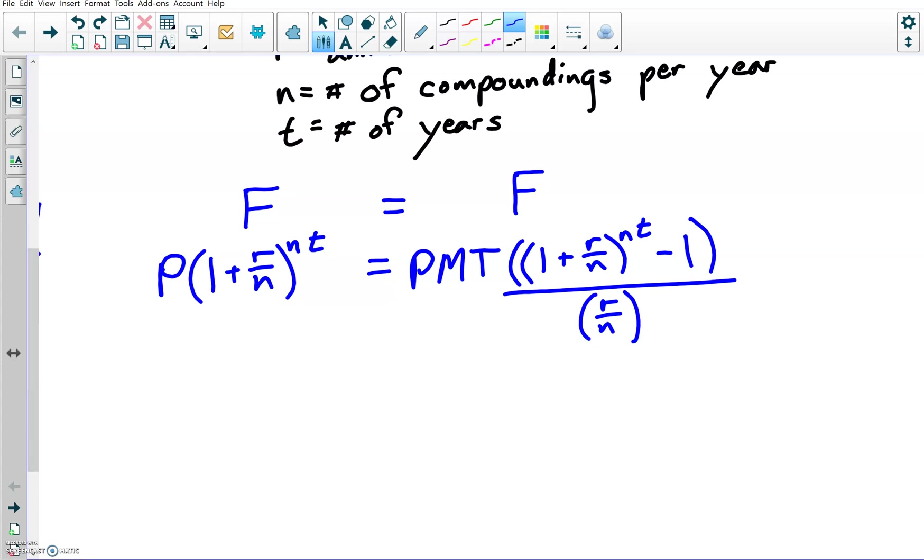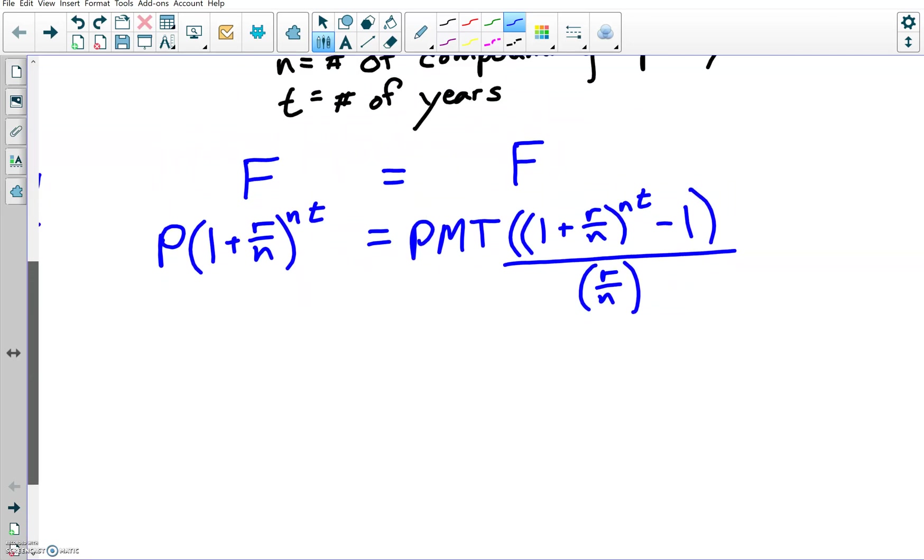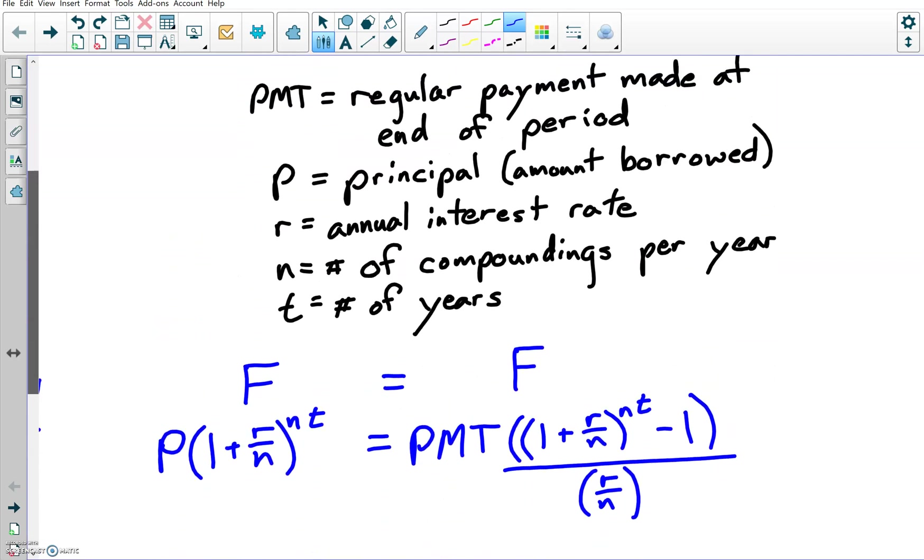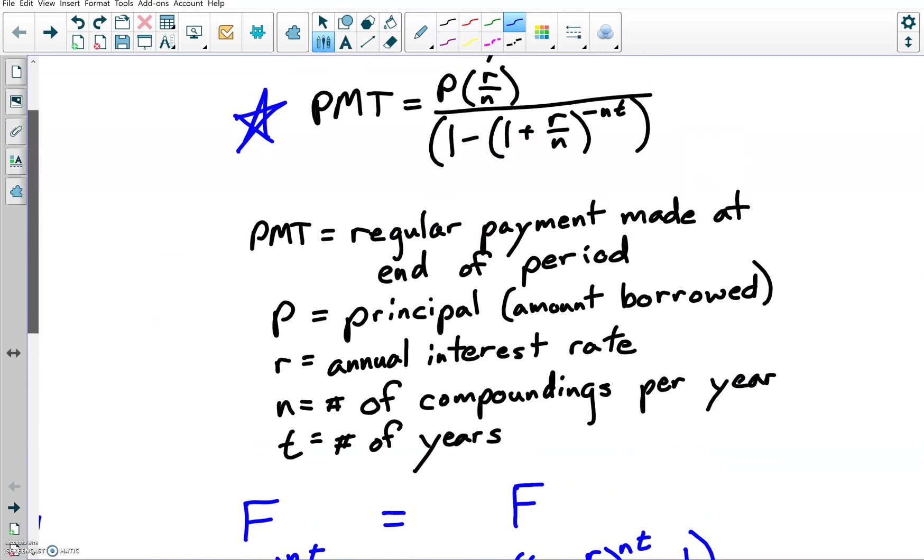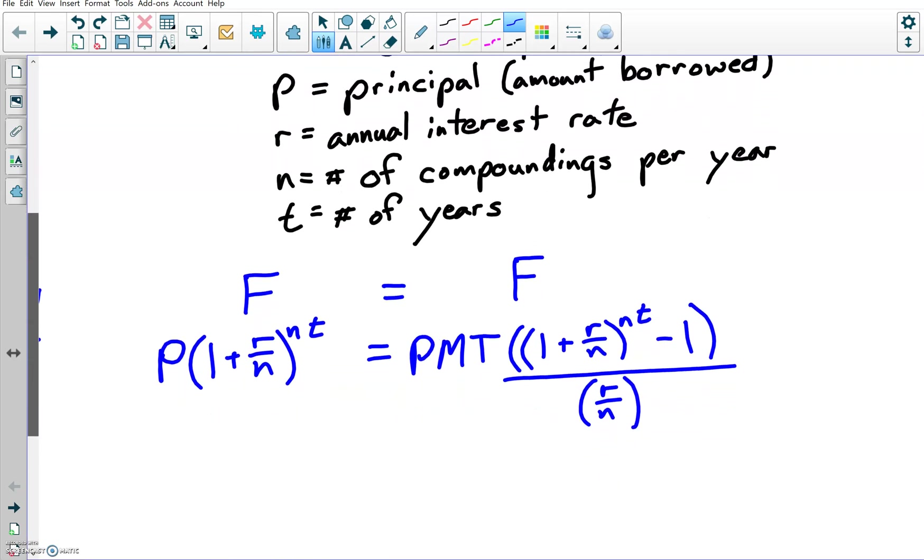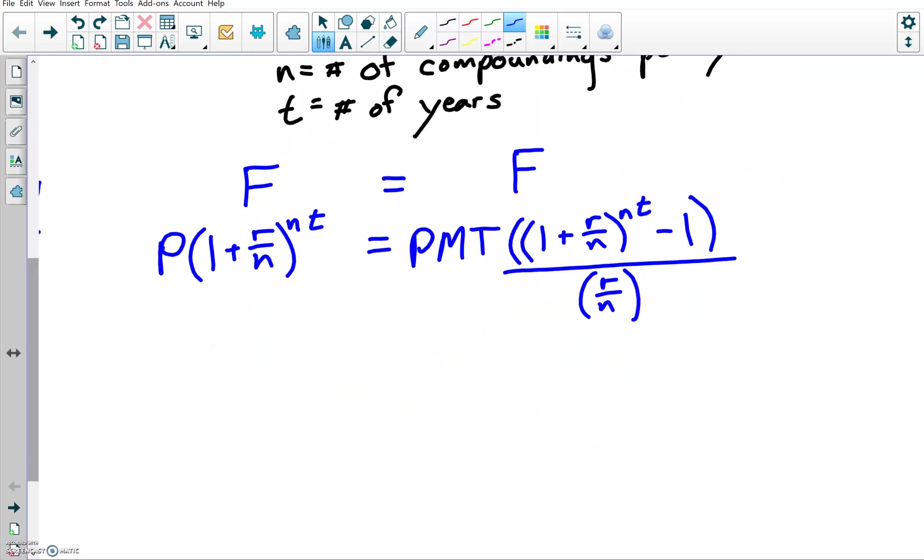These totals will end up being the same over time. If I look up here, I kind of see all the pieces are there. I got the payment, I got the principal, I got those r over n's, I got the n times t powers, they're all kind of there. So what I'm going to do is solve for payment. The easiest way to do this with payment being multiplied by this big old thing, I'm just going to multiply by the reciprocal of that fraction on both sides.